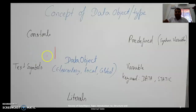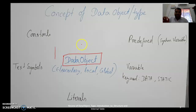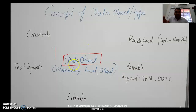When we talk about a data object, what is it? It defines a temporary memory space in the application layer, in the work process of the application layer. To do any programming in the work process, we need to define a data object. It can be three types: elementary, local, or global.